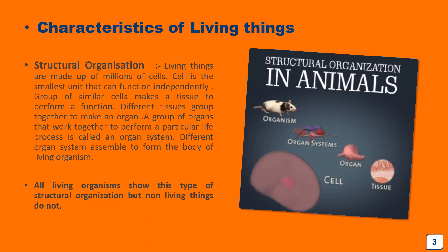The very first and most important characteristic is structural organization. Living things are made up of tiny units of life called cells. A cell is the smallest unit of an organism that can function independently. Similar cells group together to make a tissue; different tissues join to form an organ; different organs form an organ system; and different organ systems assemble to form the body of the organism. This is the structural hierarchy of living organisms.